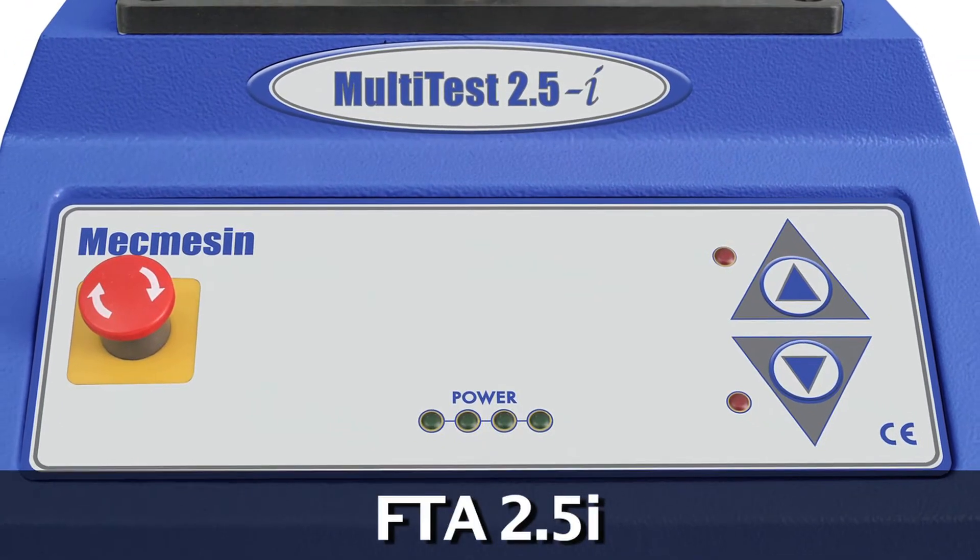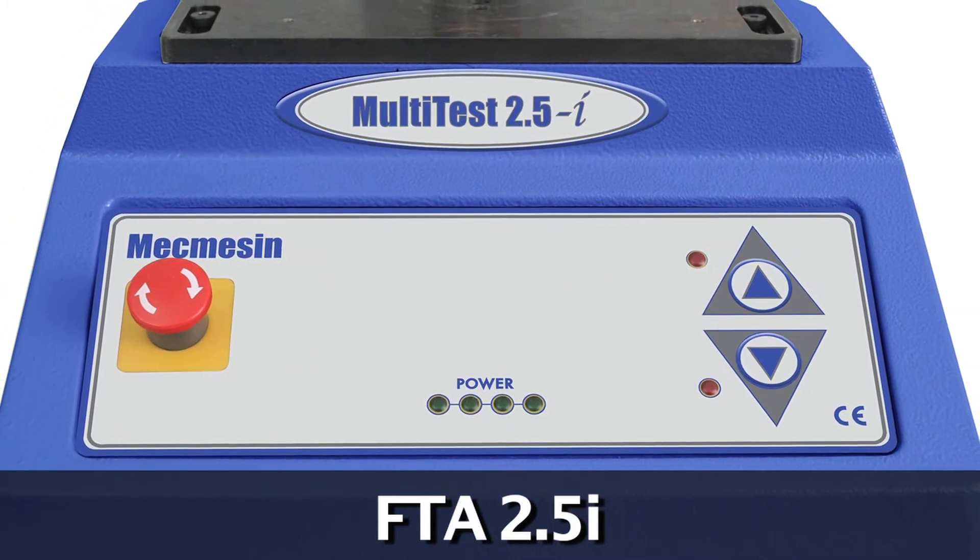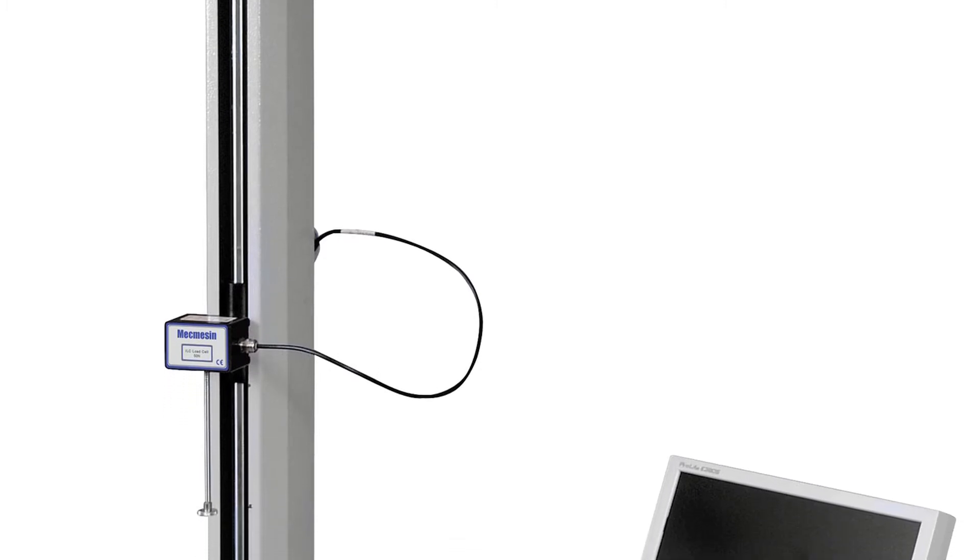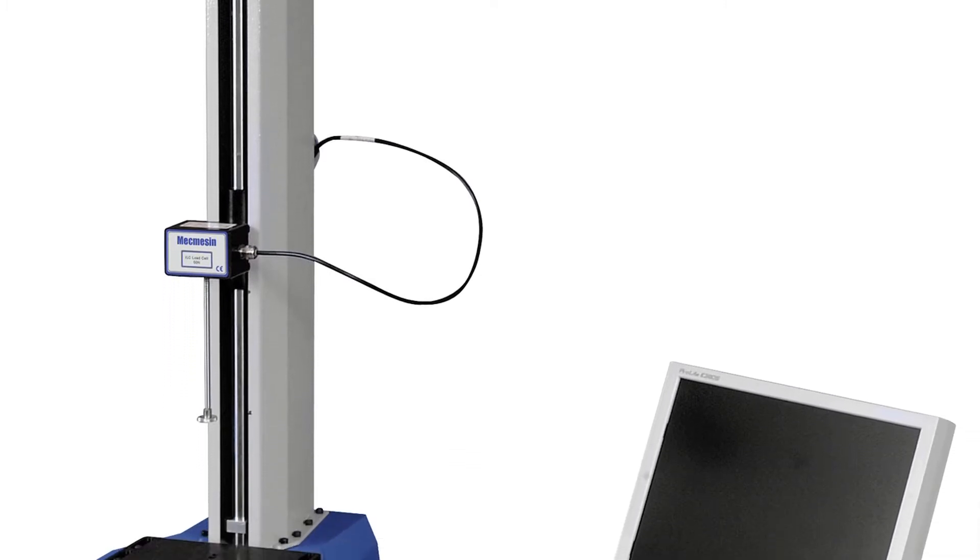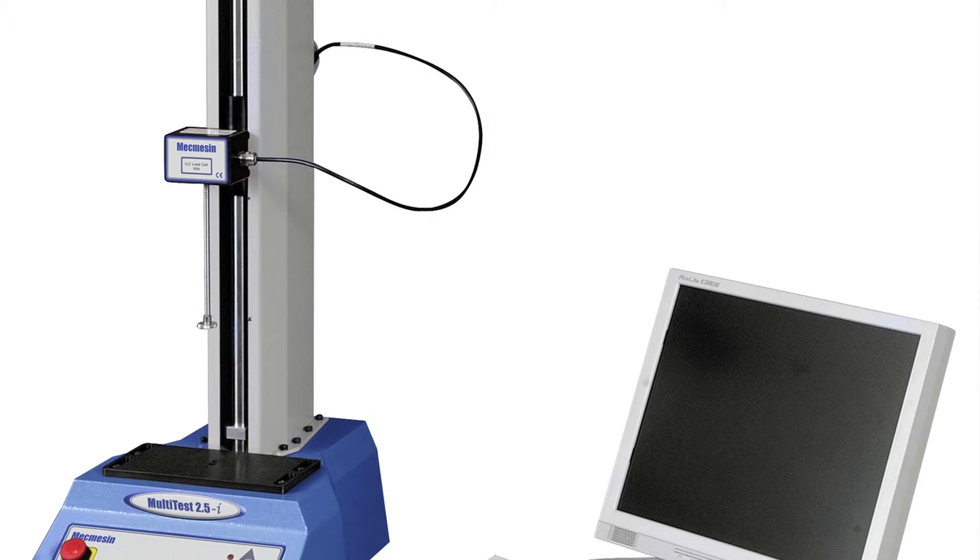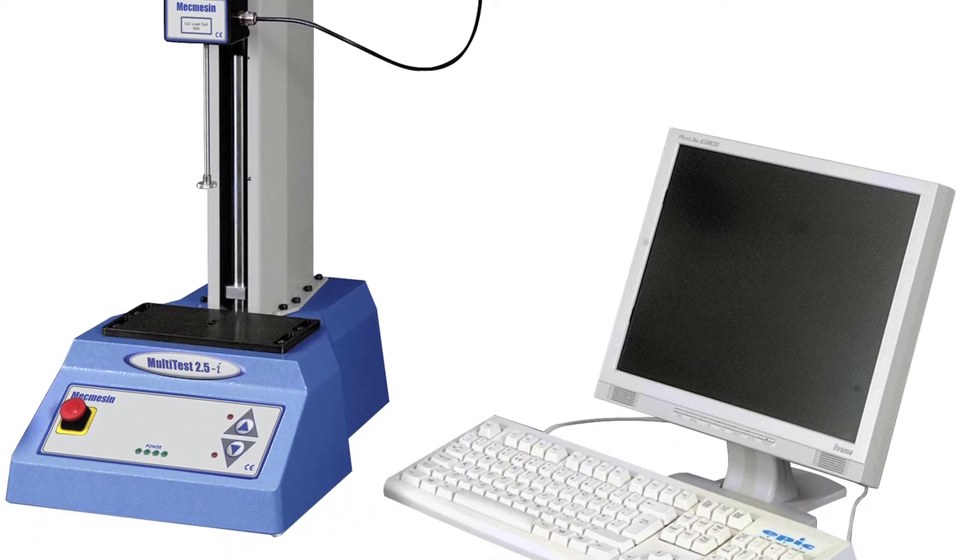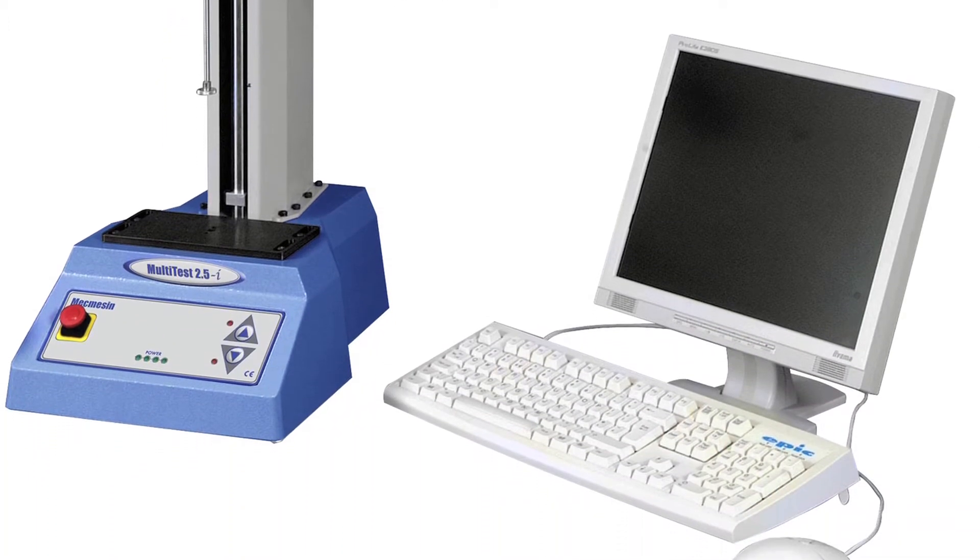The FTA 2.5i is based on the Mecmesin Multitest 2.5i, the 2.5kN test center for tension and compression. The FTA 2.5i is controlled by Mecmesin's Emperor software, directly connected to the testing center to control the machine and capture data.